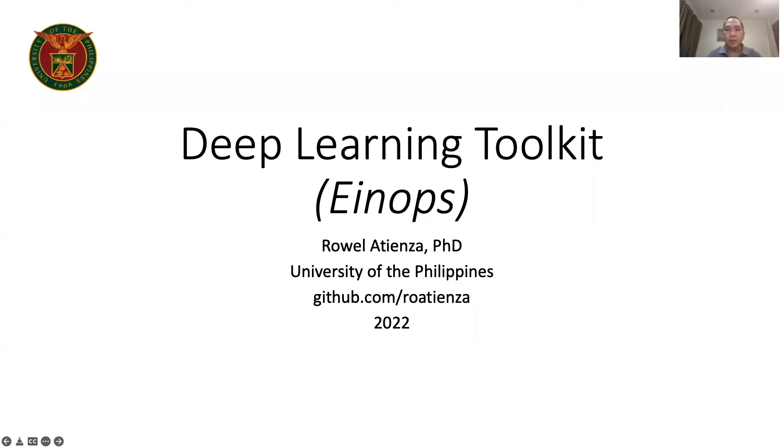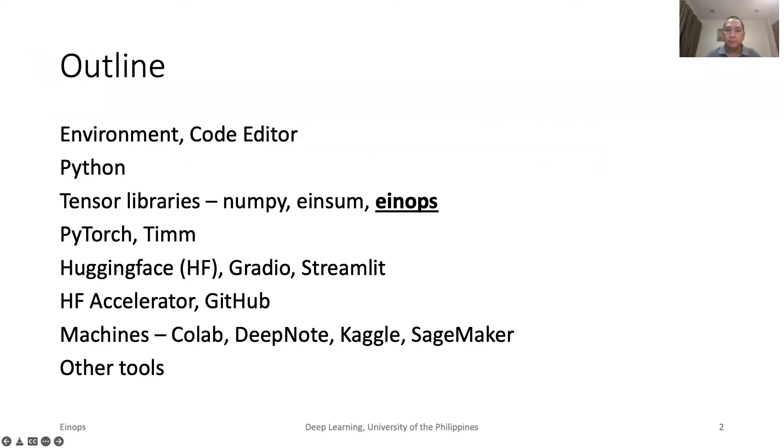We continue our discussion on Deep Learning Toolkit. In this talk, we focus on another tensor operations library called EinOps. There are still some tensor operations that EinSum cannot do. For example, it is not easy to arbitrarily transpose and fuse axes at the same time. It is also difficult to perform resizing of tensors like upsize or downsize. For these tensor operations, we use EinOps.